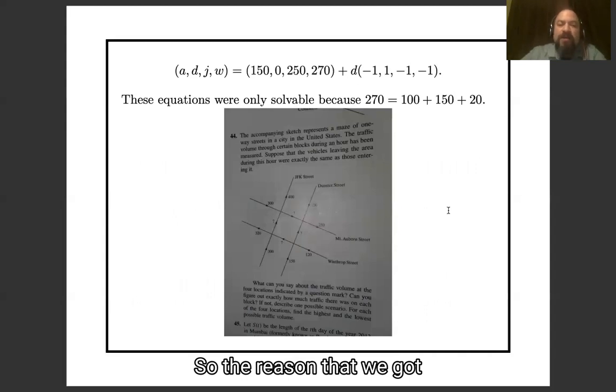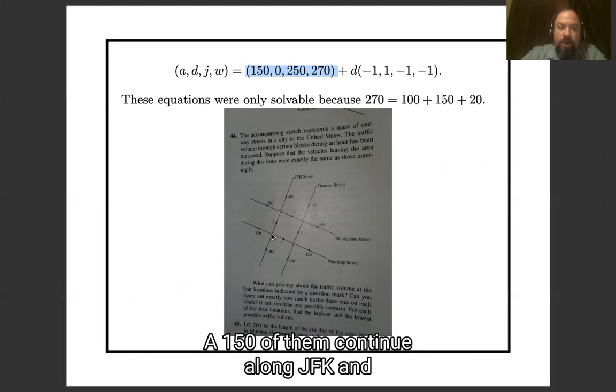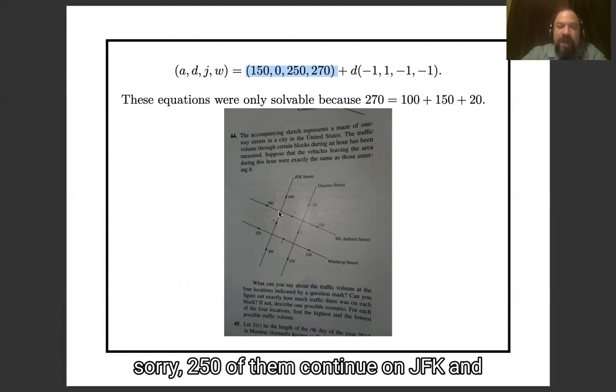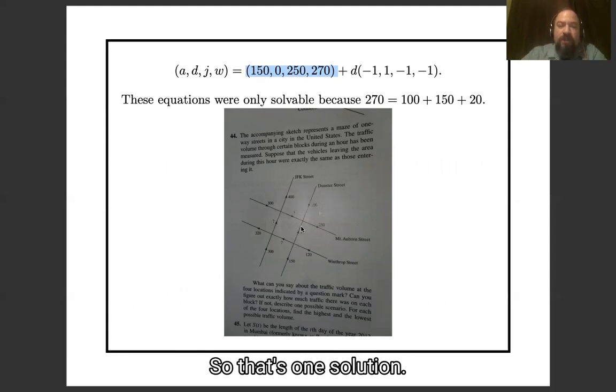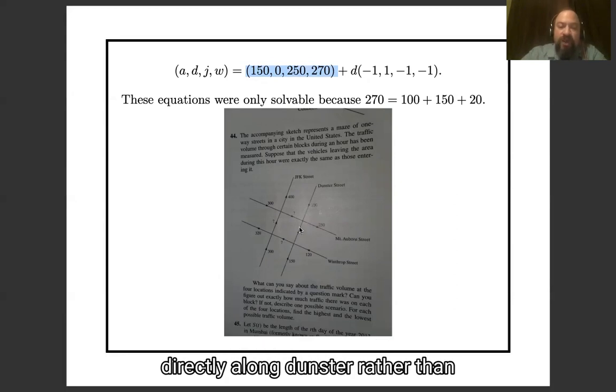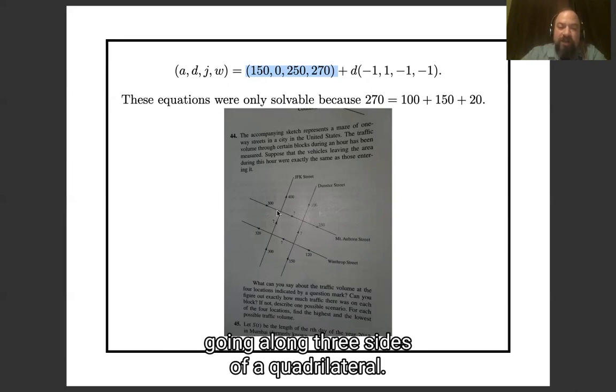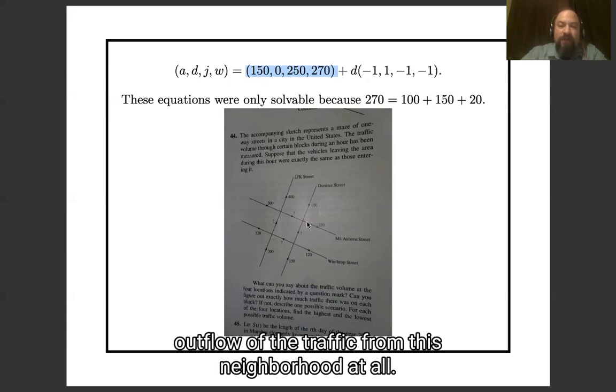So the reason that we got a one-dimensional family of solutions, one way to think about it is, so here's one solution. One solution is that 270 cars drive along Winthrop, 150 of them continue along JFK, and 150 of them continue along Mount Auburn, and no one at all drives along Dunster. So that's one solution, but then if some of the cars decide to cut across the corner and go directly along Dunster rather than going along three sides of this quadrilateral, that won't change the inflow or outflow of the traffic from this neighborhood at all.